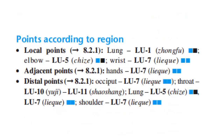Points according to region — local points: for the Lung, Lung 1; for the elbow, Lung 5; for the wrist, Lung 7. Adjacent points: for the hands, Lung 7.